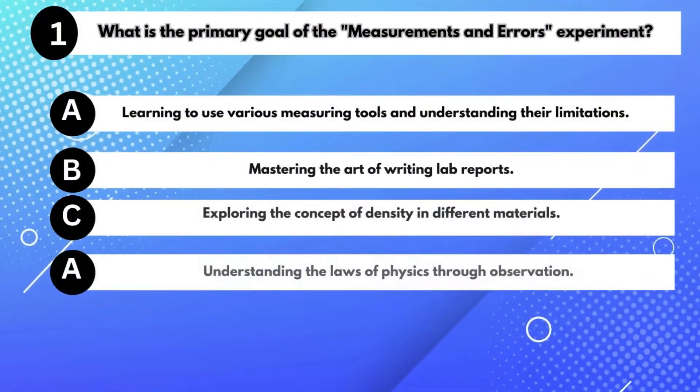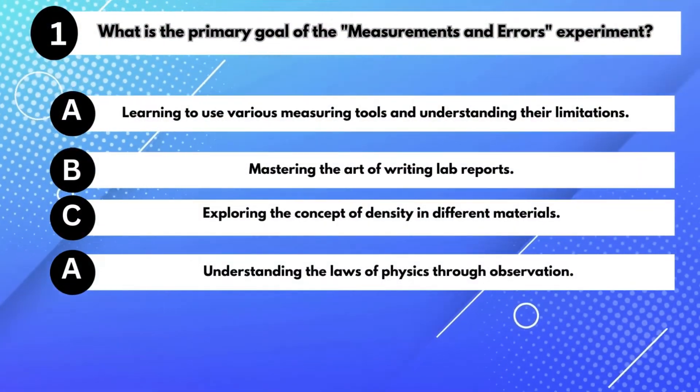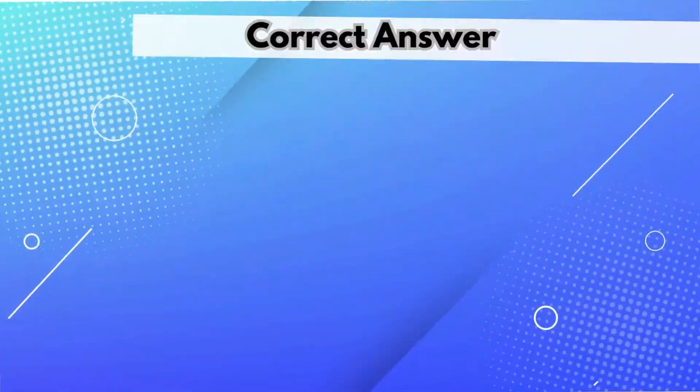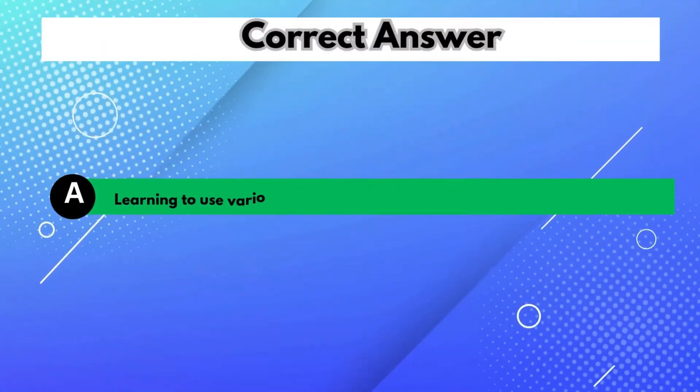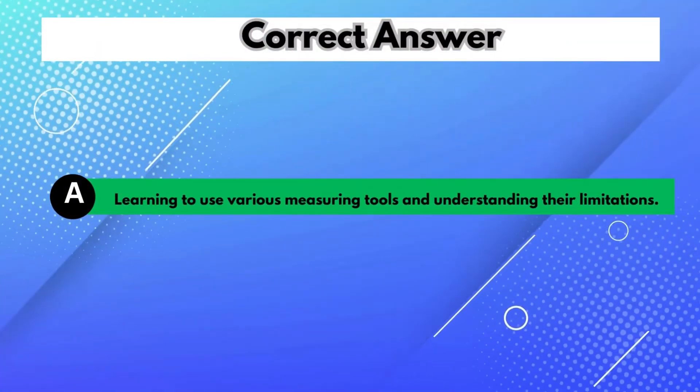What is the primary goal of the Measurements and Errors experiment? Answer A: Learning to use various measuring tools and understanding their limitations.